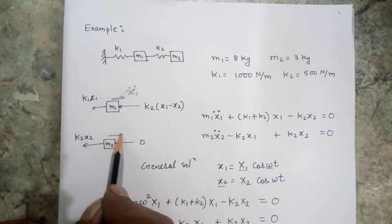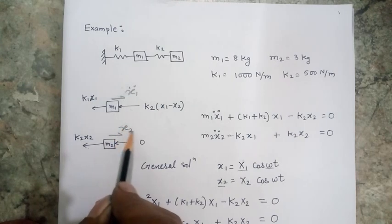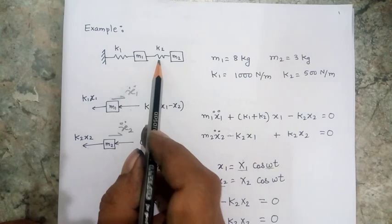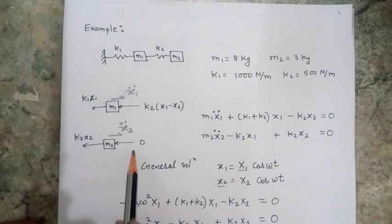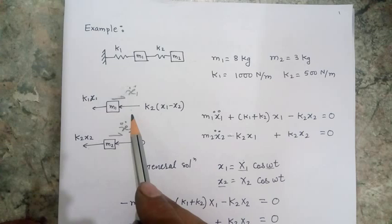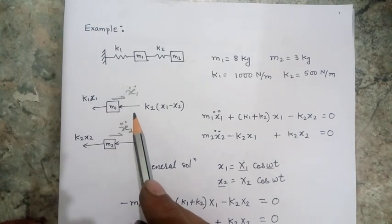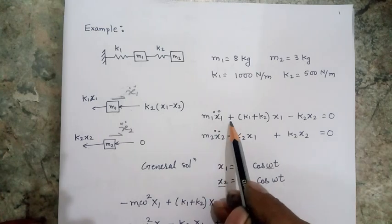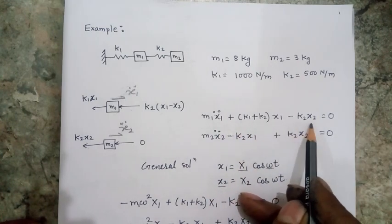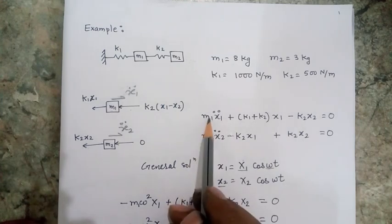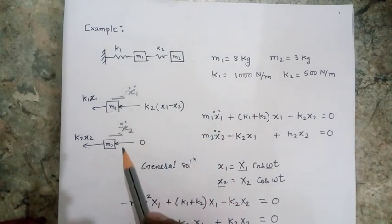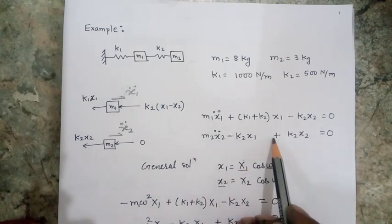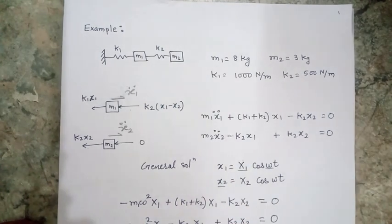Similarly, for the second mass, if the mass is going in this direction with an acceleration x2 double dot, there will be only one force on this side and no force on the other side. When I apply the D'Alembert principle and write the equation of motion, I get: m1*x1̈ + (k1 + k2)*x1 − k2*x2 = 0, and the second equation: m2*x2̈ − k2*x1 + k2*x2 = 0.